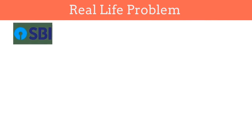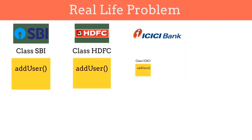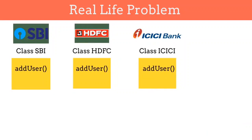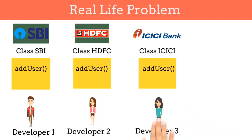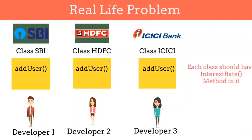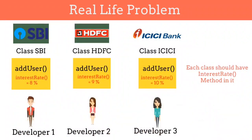Consider we got a job to create a software for all the banks in India like SBI, HDFC, ICICI etc. For developing the software, we will create a separate class and functions for every bank. Since this is a big task, we will split it into teams — developer 1 will develop a class for SBI, developer 2 will develop a class for HDFC and so on. Now I want all these developers to implement some method in each class, like an interest rate method. Each bank can have a different interest rate — SBI will have 8%, HDFC will have 9%, and so on. Since there are different developers implementing these classes, how will I force them to implement the interest rate method in all the classes?